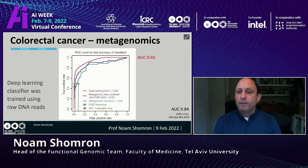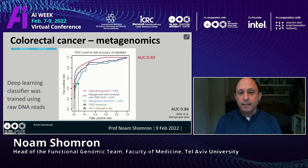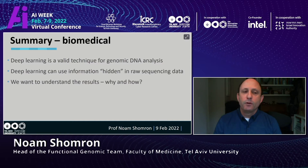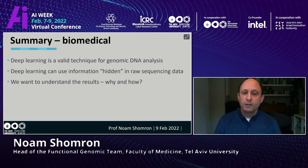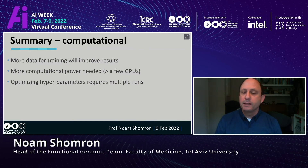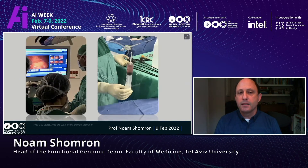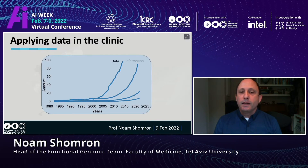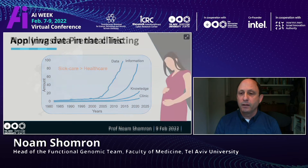Performance was better. We also noticed that we are able to identify whether the sequencing comes from the DNA of bacteria or the DNA of the host. To summarize: deep learning is a valid technique for genomic DNA identification. Deep learning can reveal hidden information in raw sequencing data. More data for training will improve results. Computational power is needed — more than a few GPUs — and optimizing hyperparameters requires multiple runs.